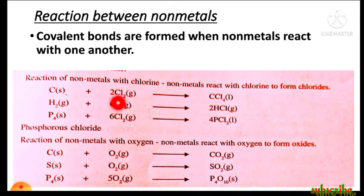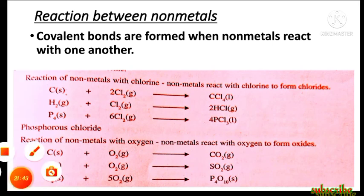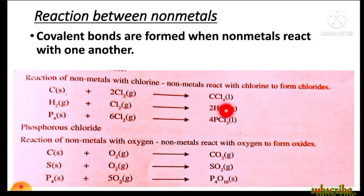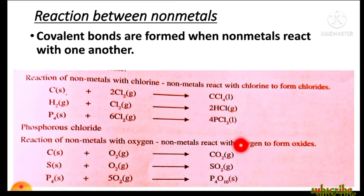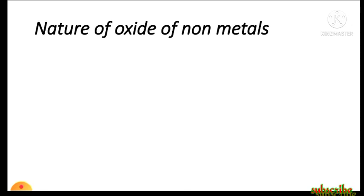The second type is the reaction between nonmetals: covalent bonds are formed when nonmetals react with one another, because both have similar electronegativity. Examples include: carbon reacting with chlorine to form carbon tetrachloride (CCl₄); hydrogen and chlorine forming hydrogen chloride (HCl); phosphorus trichloride (PCl₃); carbon dioxide (CO₂); sulfur dioxide (SO₂); and phosphorus pentoxide (P₂O₅). These are examples of nonmetals reacting together and forming covalent compounds.